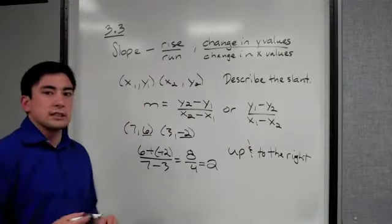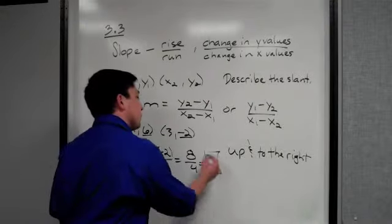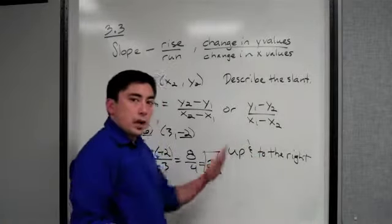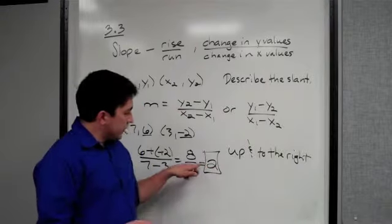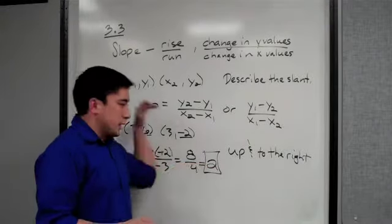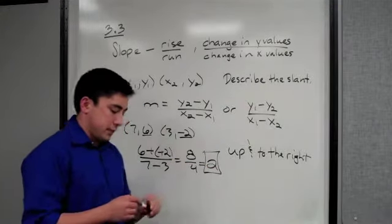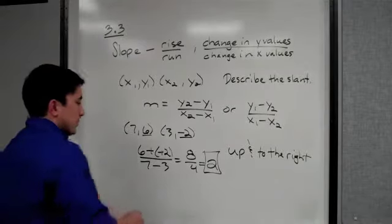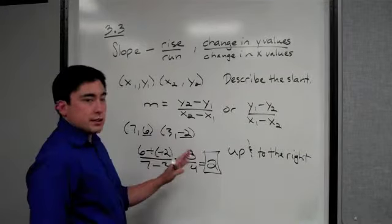That's how you describe the slant. Here's your slope and here's how you describe it - it's going up into the right because it's a positive slope. If there was a negative right in front of it, you'd be going down into the right.